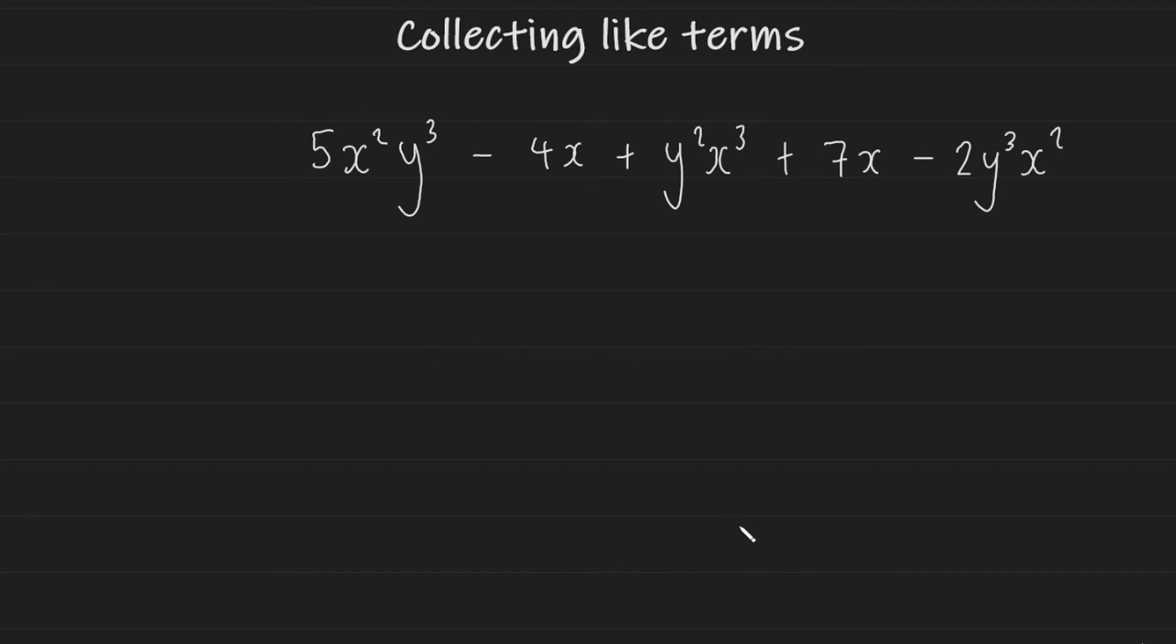And now for our final example, we've tried to make it a bit more challenging than the previous examples, but we're going to combine everything that we've learned from the previous examples. So we're going to collect like terms. I'm going to start with my first term. There is an x squared and a y cubed. So now I'm going to look throughout my expression to find any x squareds and y cubes that are next to each other. And it doesn't matter which order they have to be next to each other.